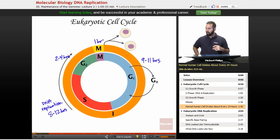And so the normal human cell will divide, on average, about every 24 hours.